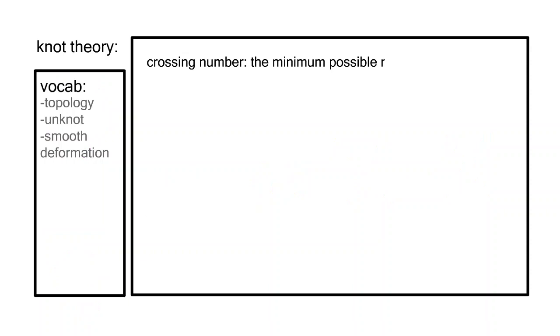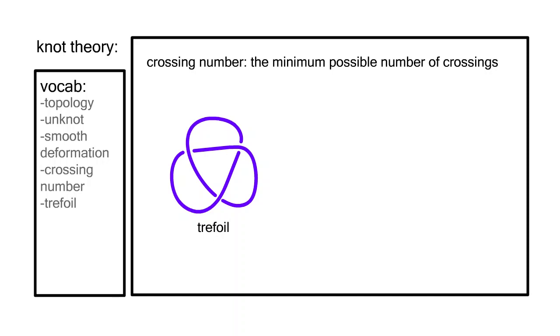This is a projection of the trefoil. Knot diagrams are called projections, and are what the shadow would look like, but with the crossings shown. It's also called 3-1 because it is the first knot with a crossing number of three.